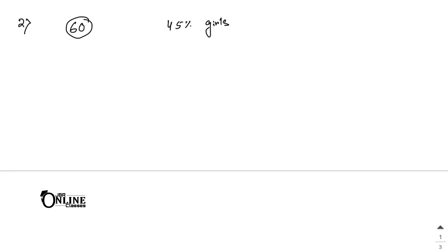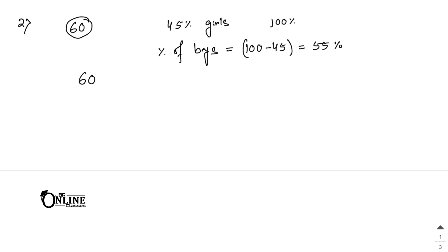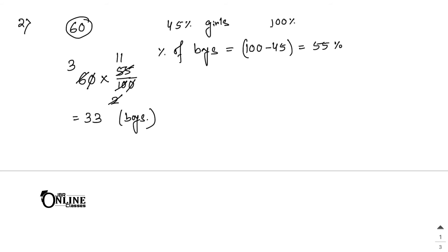Sum number 2: In a class of 60 students, 45% are girls — find the number of boys. Since total percentage is 100%, percentage of boys = 100 − 45 = 55%. Number of boys = 60 × 55/100. The zeros cancel, 60/100 simplifies, giving 33. So there are 33 boys.